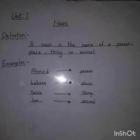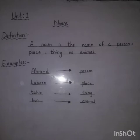Here we have given some examples. First: Ahmad — Ahmad is a person. Second: Lahore — Lahore is a place. Third: table — table is a thing. Fourth: lion — lion is an animal.